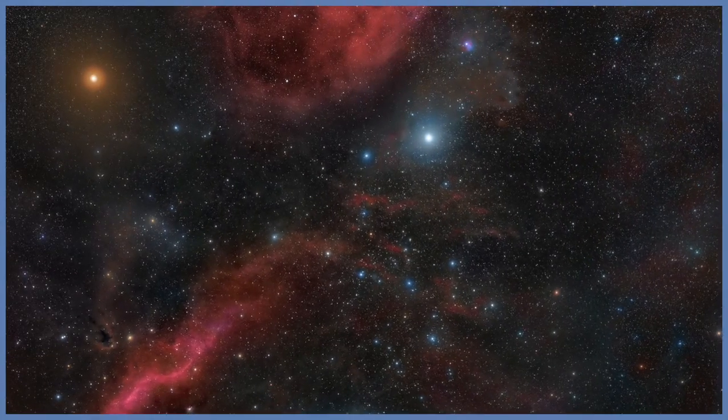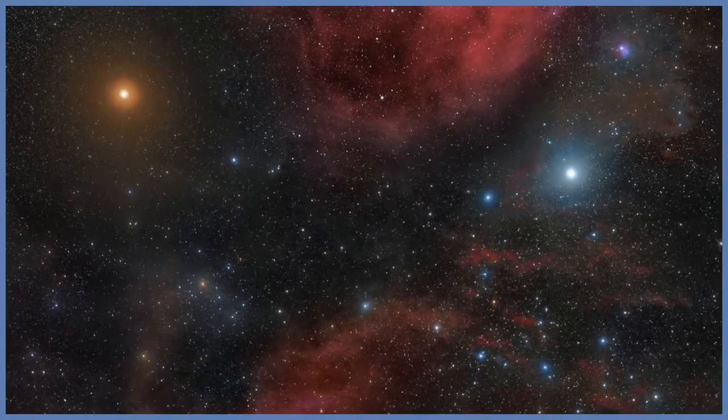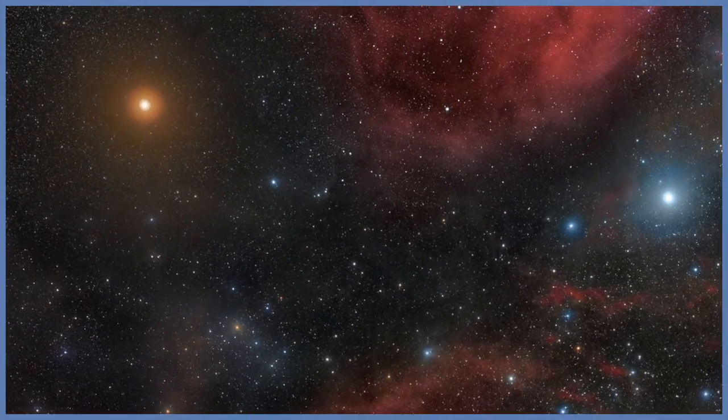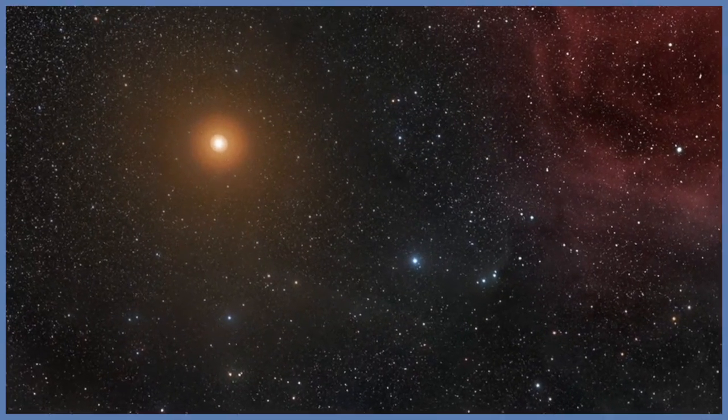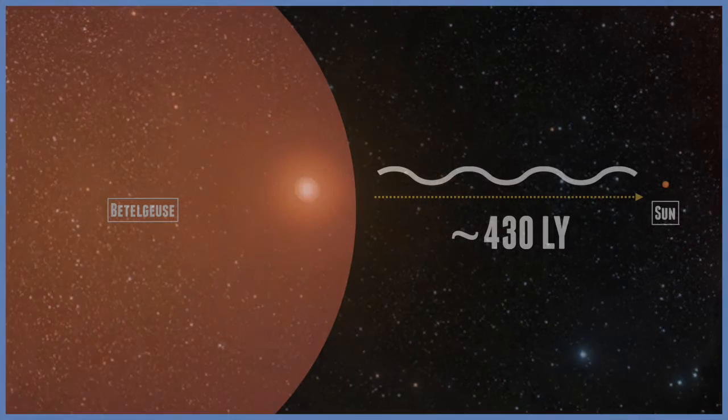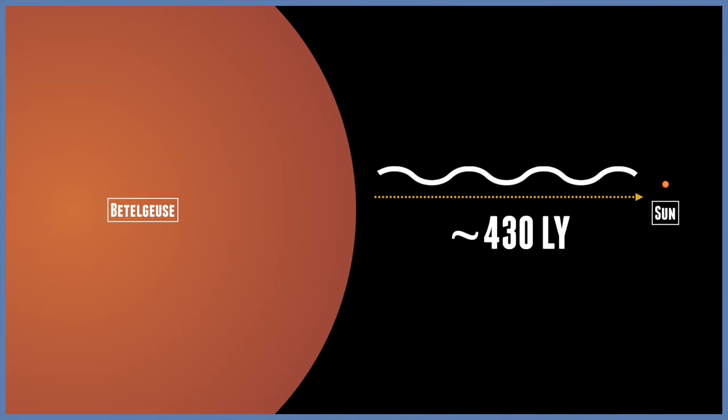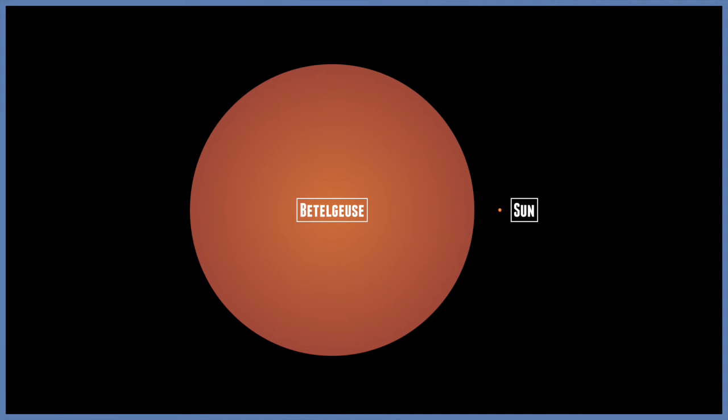Let's go to a star we know and love with an unpronounceable name. People might say Betelgeuse or Betelgeuse. Frankly, we just know it as the big red star in Orion. Betelgeuse is about 430 light years away, meaning the light you see from this star left in the late 1500s.